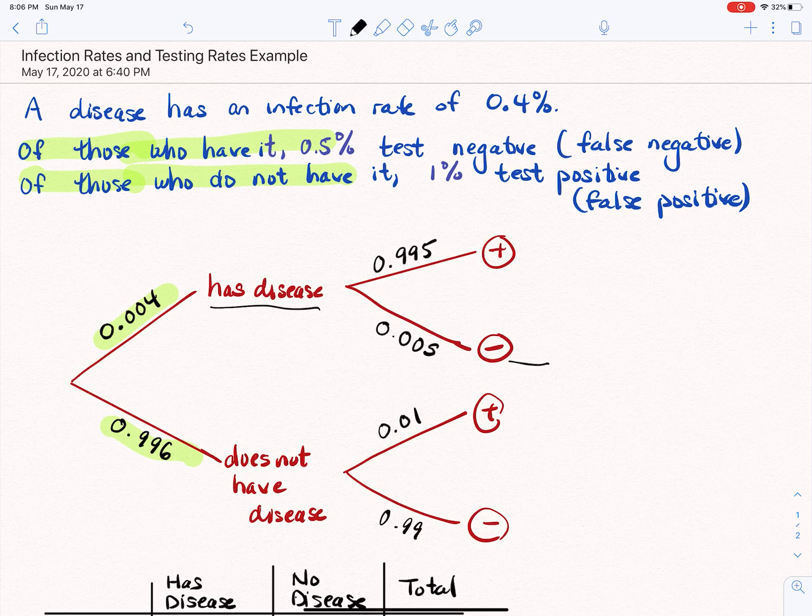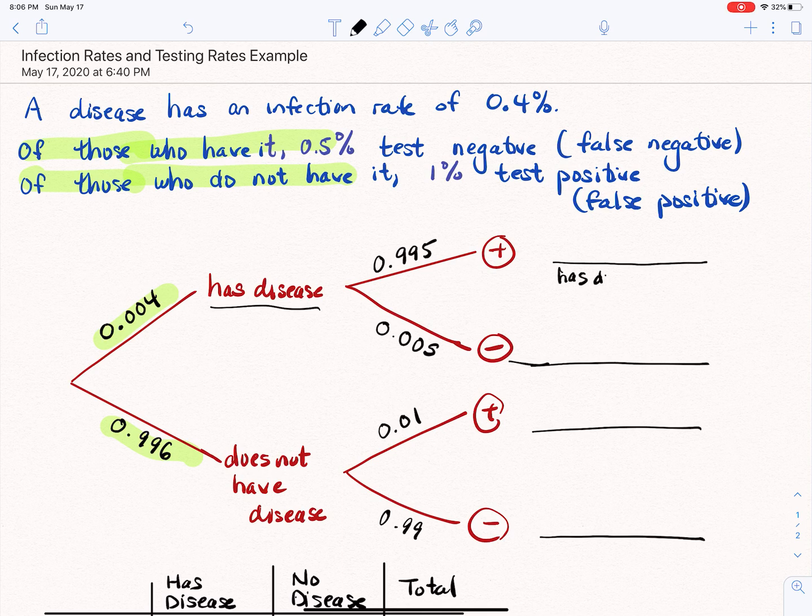So what kind of information do we get out of this? Well, what we can do is, remember with a tree diagram, we multiply along the branches to get the probabilities that both events happen. So this first one here would be, has the disease and tests positive? So if we were to multiply those two numbers together, we would have 0.00398. And if we want to know how many have the disease but tests negative, we would multiply 0.004 and 0.005 together. And that would give us 0.00002.